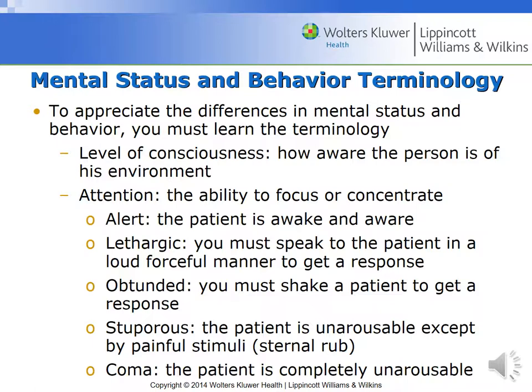Some terminology that is important to know — all of this is in your book. Dealing with level of consciousness: this is how aware the person is of his or her environment. There's a table on level of consciousness and arousal in chapter 17 in the nervous system. Attention is the ability to focus and concentrate — sometimes a lack of ability to focus and concentrate, depending on whether it's a pathological or environmental issue. Checking to see if a patient is alert means they are awake and aware of their surroundings.